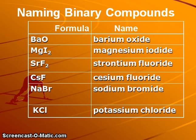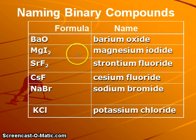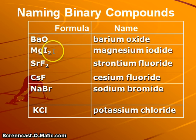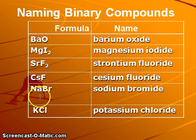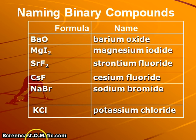Here are some examples of binary compounds. Barium oxide: barium is plus two, oxide is minus two. Magnesium iodide: magnesium plus two, iodide is minus one, so we have a one to two ratio. Same thing will occur for strontium fluoride. Cesium fluoride is a one to one ratio because we have a plus one ion and a minus one ion. Sodium bromide is again a one to one ratio, as is potassium chloride. Please note the positive ion is always written first and the negative ion is always written second.